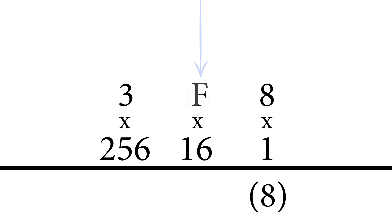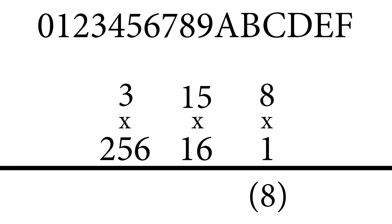We're going to do 16 times F. Now F we have to convert. F is 15 remember, so on the top there anything after 9: A, B, C, D, E, F are actually 10, 11, 12, 13, 14, 15.